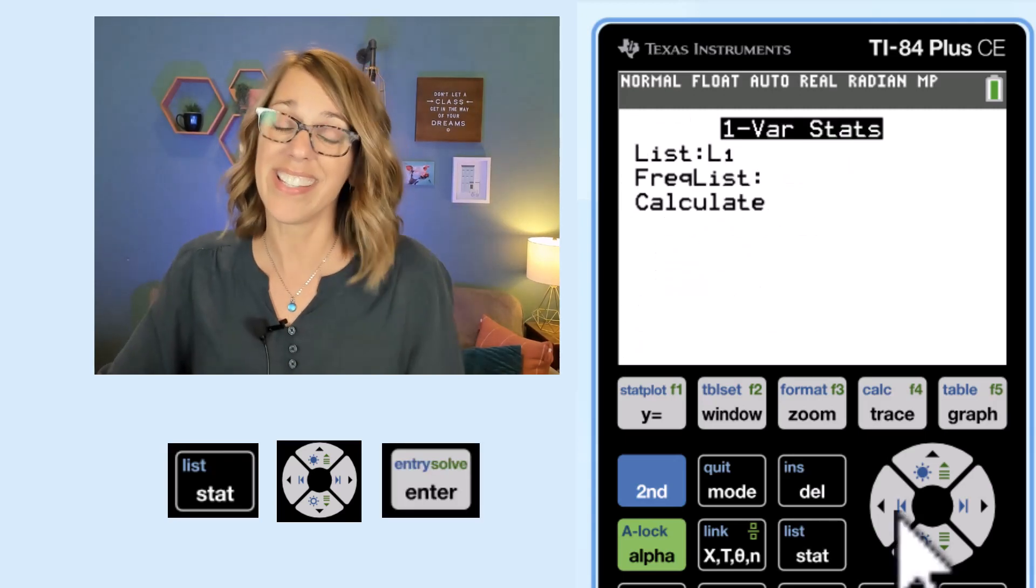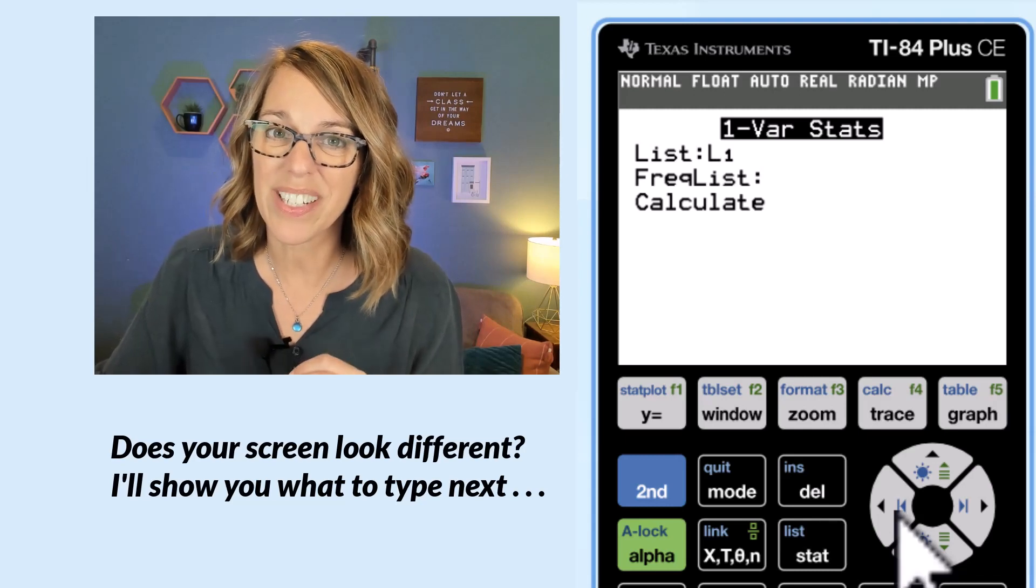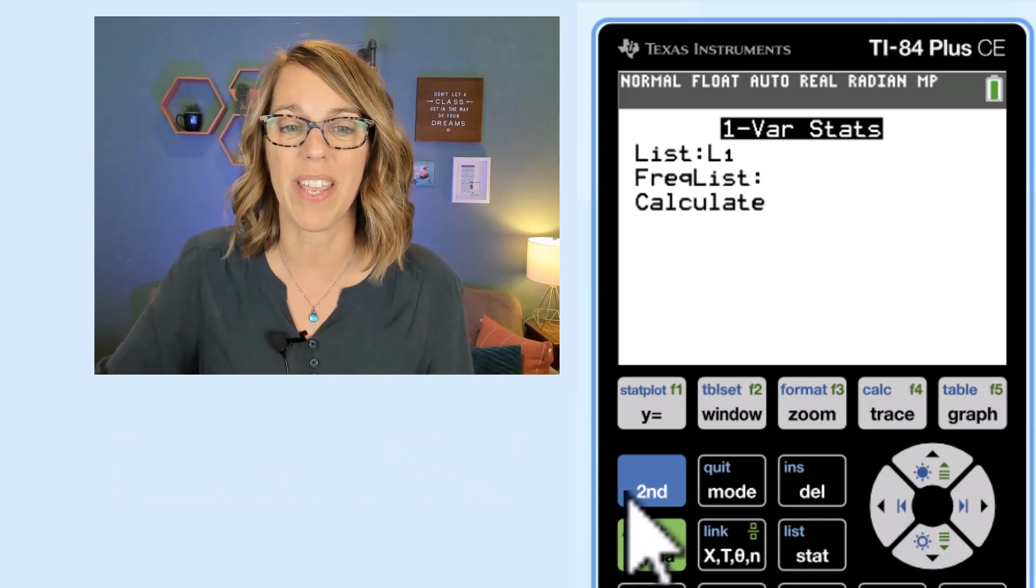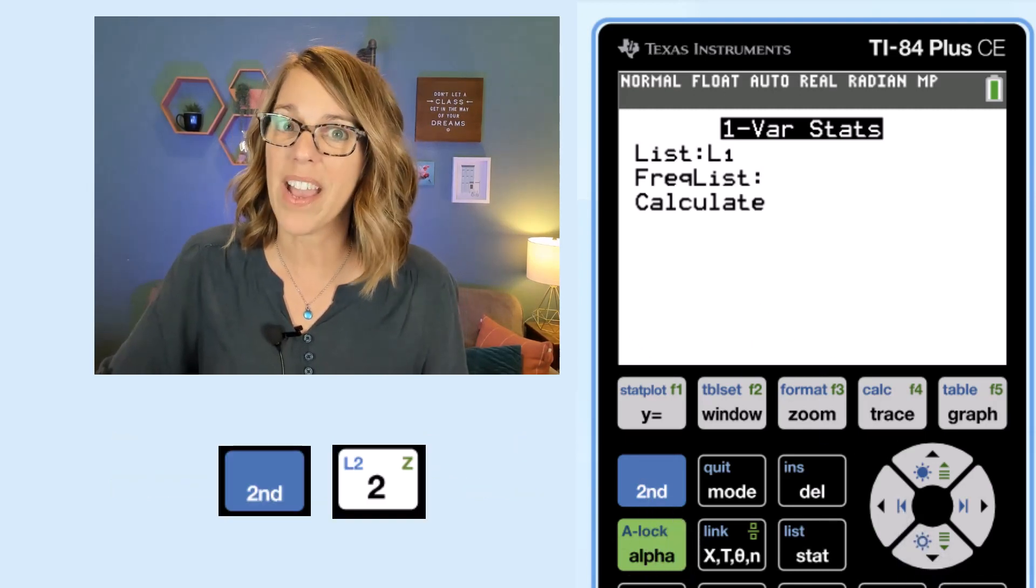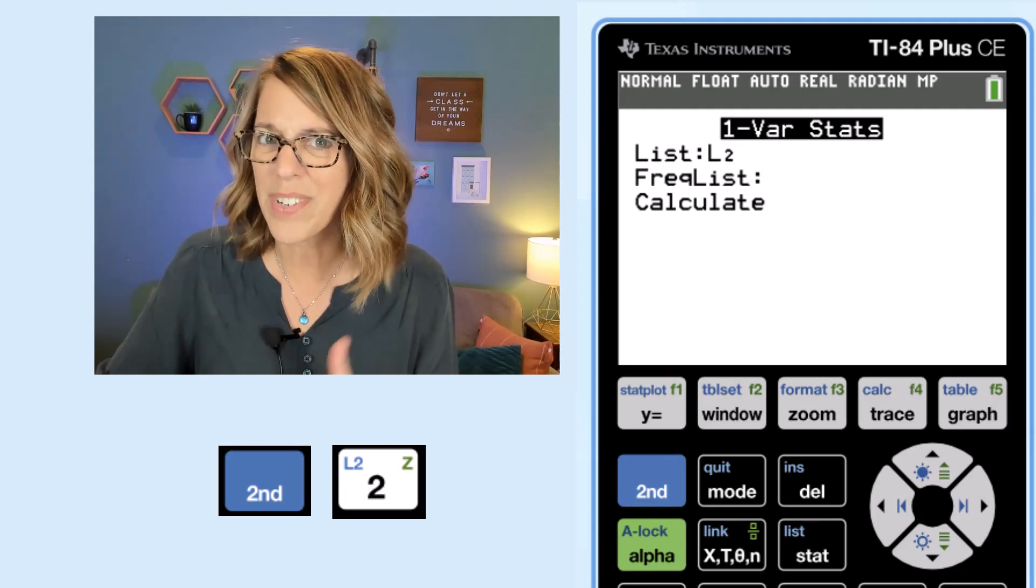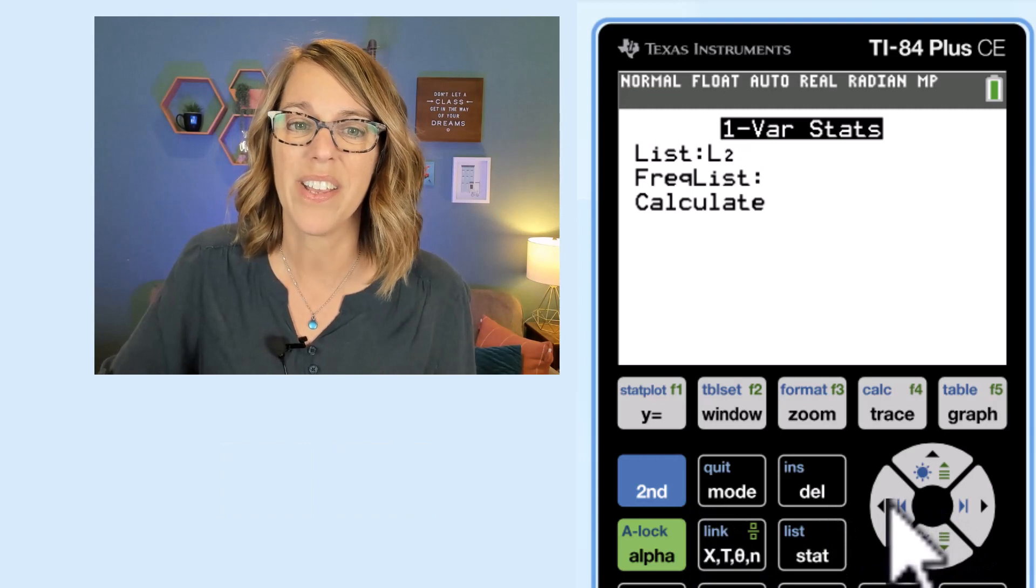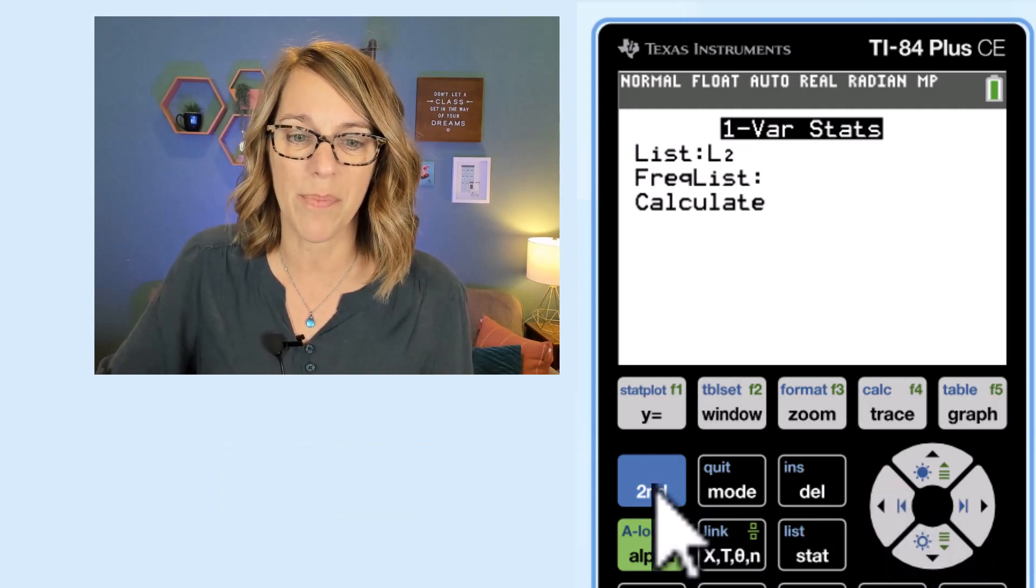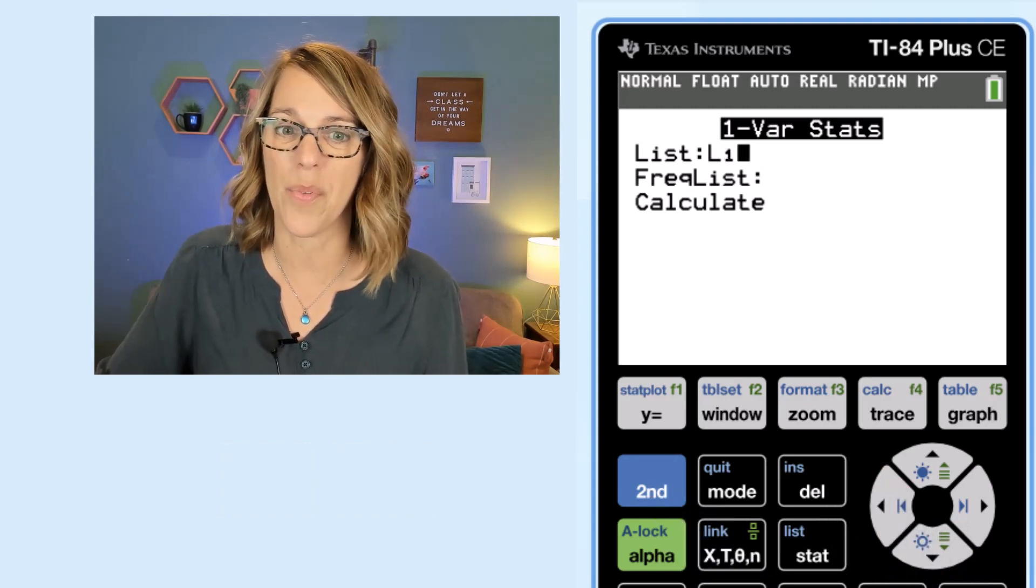Now my data is in list one, but if yours happens to be in a different list you're going to choose that list by hitting second followed by the numbers. So second two would be L2, second three would be L3, and so on, but mine's in L1 so let me arrow back back and then do second L1.